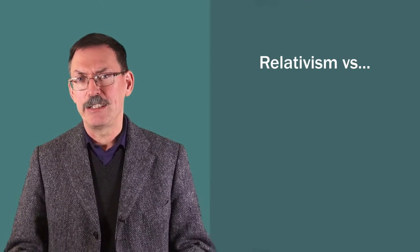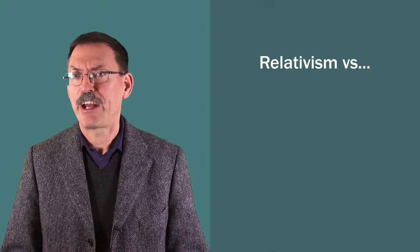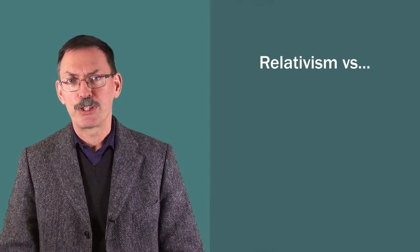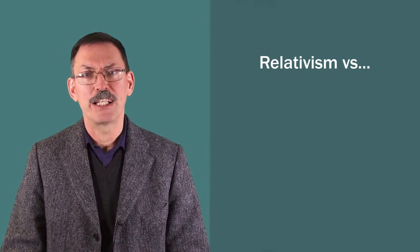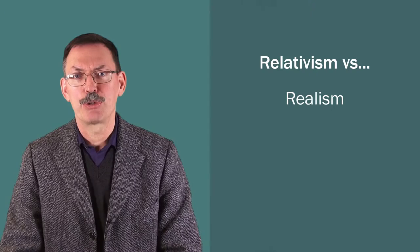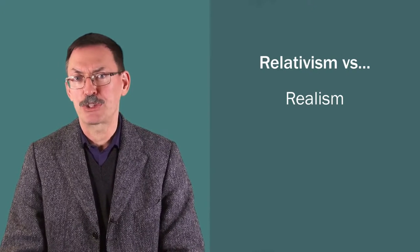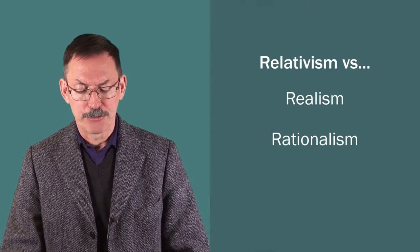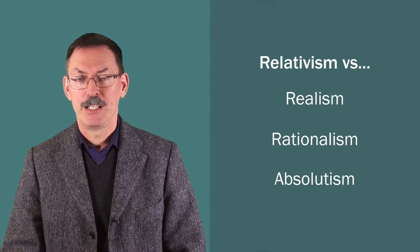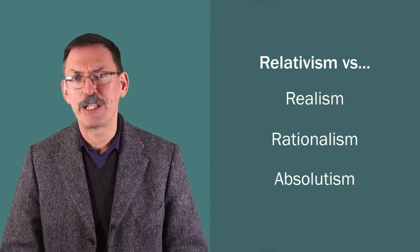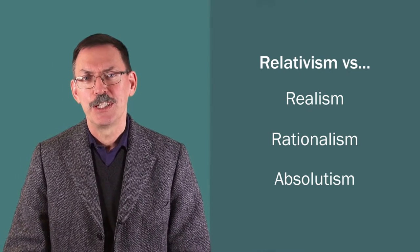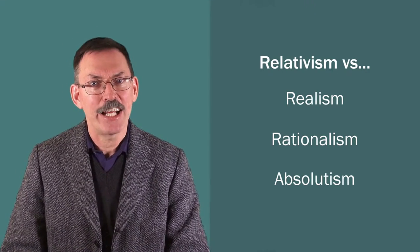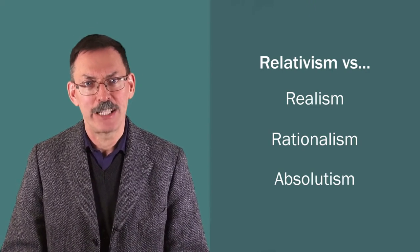Well, if you look at the literature in philosophy, you might think that there are very many opponents. Sometimes the central opponent of relativism is described as realism. Sometimes the central opponent of relativism is called rationalism. And sometimes the general opponent of relativism is called absolutism. And I think we need to understand a little bit the meaning of those terms that relativism is opposed to, allegedly, to also get a clearer handle on the debates around relativism.